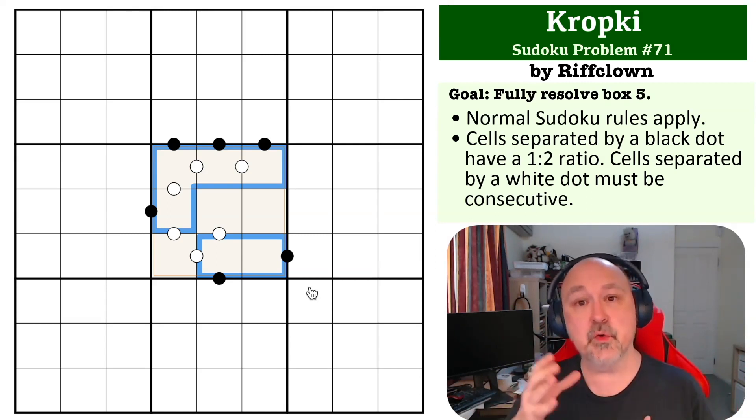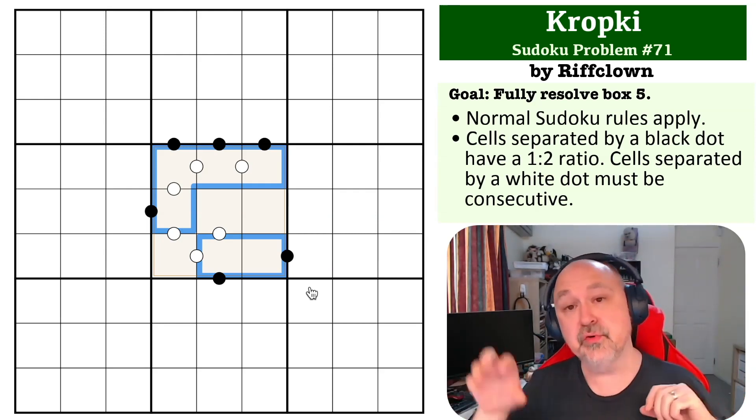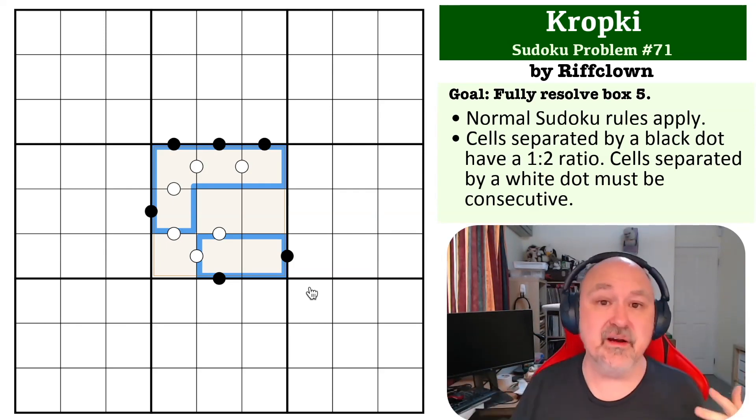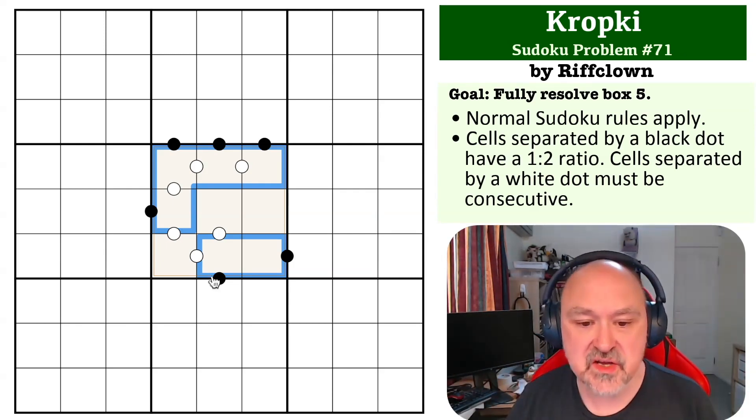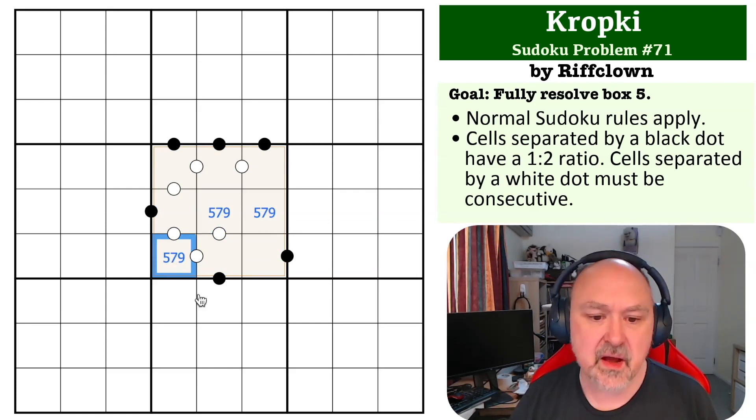So the digits you have are two and one, four and two, six and three, and eight and four. None of those are five, seven, or nine. So the digits here are five, seven, and nine.